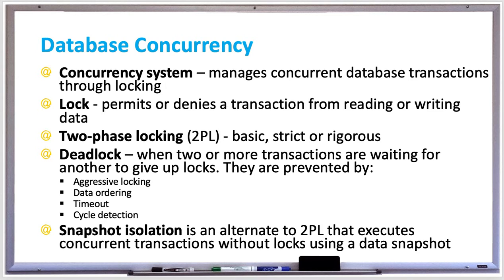2PL stands for two-phase locking, which is basic, strict, or rigorous. A serializable isolation level means that a transaction is independent from other transactions, and there are three types of two-phase locking which help prevent conflicts and ensure serializable transactions. In basic two-phase locking, locking and unlocking are done in two phases: the growing phase, where new locks may be acquired but none can be released, and the shrinking phase, where existing locks may be released but no new locks can be acquired.